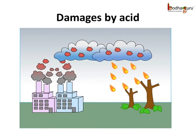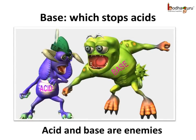Acid can cause some damage. Is there anything that can be done to stop the harmful effects of acid? What can be done about acid decaying teeth or making soil barren? Yes — while learning about acid, let's learn about another substance which is the enemy of acid, and it is base. Acid and base are like snake and mongoose. The base cancels the acid — it can prevent or stop acid.